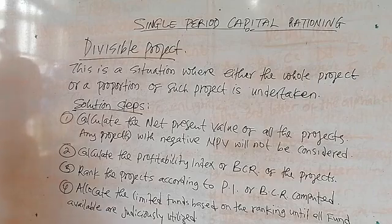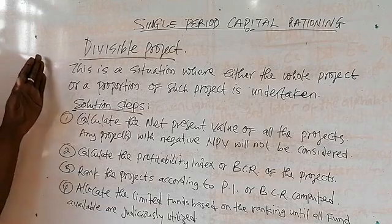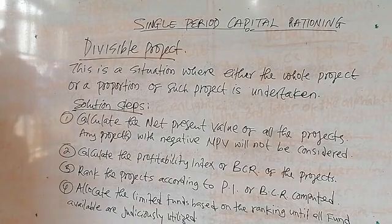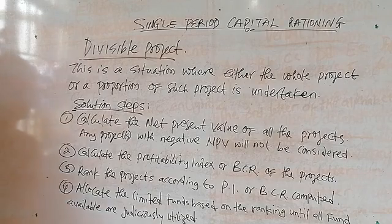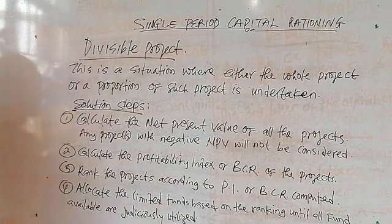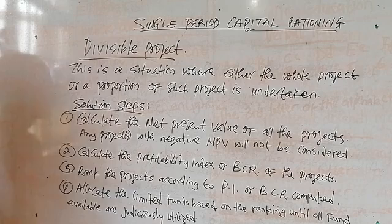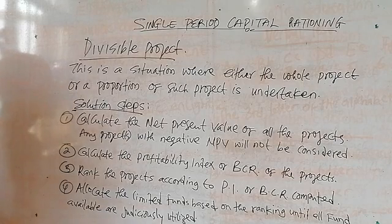The first scenario is a case whereby the project is divisible. Under single period Capital Rationing, we have divisible projects, we have mutually exclusive projects, we have independent projects, and we have mutually dependent projects.